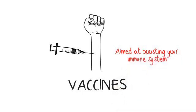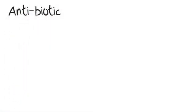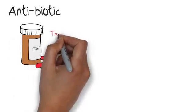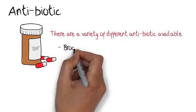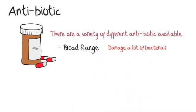A further tool used when dealing with disease and bacteria is called an antibiotic. Antibiotics are taken to try to kill the bacteria that caused the disease. There are a variety of different antibiotics available. One type is broad range antibiotics, which will damage a lot of bacteria. This type has both pros and cons — one of the cons being that in order to aid digestion we have a lot of bacteria within our gut, and damaging this bacteria would cause problems with digestion. This is why we must be careful when considering which range of antibiotics to use when treating a particular infection.